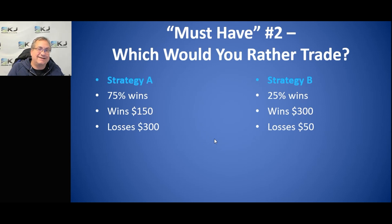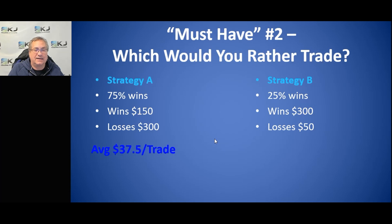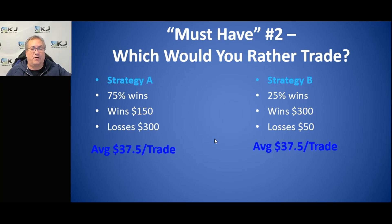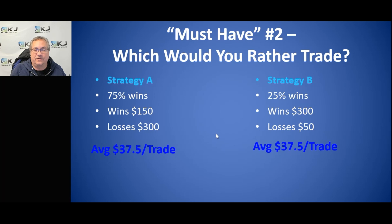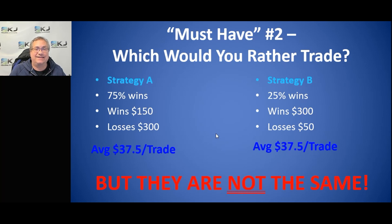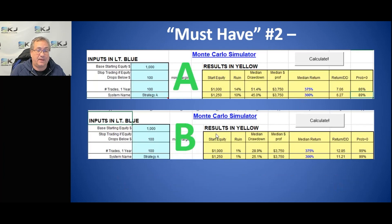It's kind of a trick question, because if you look at the average for both, they're the same. If you trade them both over time, at the end you should have the same amount of money. The difference is the path you take to get there — meaning drawdowns, which we're always trying to avoid. The risk involved with both strategies is not the same; the profit is the same but the risk is not. One way to look at risk-adjusted returns is to use a Monte Carlo simulator, available on my website.